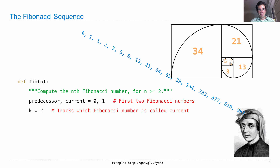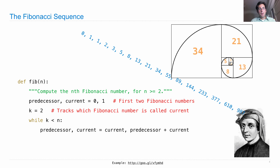Current is currently bound to the second Fibonacci number, so k is 2. And then we'll iterate through the Fibonacci sequence until current is bound to the one that we actually want, and that's what we'll return. So, while k is less than n — meaning, while it's the case that current is bound to a Fibonacci number other than the one we want, n — we will do the following: we will rebind the names predecessor and current.